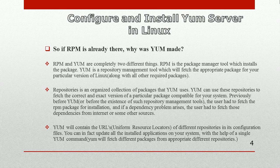So if RPM is already there, then why is YUM used? We already touched on this in the last lecture. We know that we have the RPM command and we can use it for installing any RPM package, but while installing a package with the RPM command, as a system admin you have to resolve the dependencies of a package. For example, you have package A and you're trying to install it, but you keep getting dependency errors — installation keeps failing.